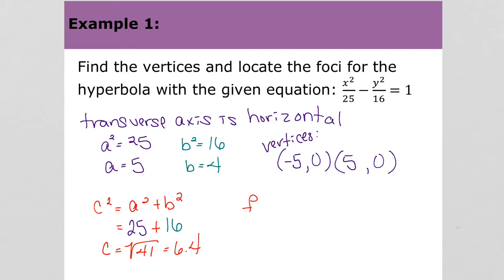The foci are along the horizontal x-axis, so the y-value is 0. We get negative 6.4, 0 and positive 6.4, 0.